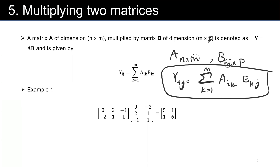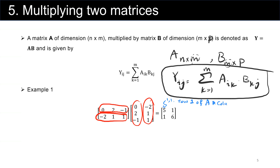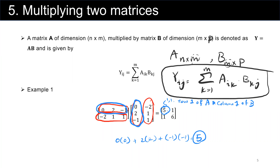Intuitively, you can use the rows of the first matrix and the columns of the second matrix. For element (1,1), we multiply row 1 of A by column 1 of B: 0 times 0, plus 2 multiplied by 2, plus negative 1 multiplied by negative 1, which equals 5. As you can see, we have 5 here.